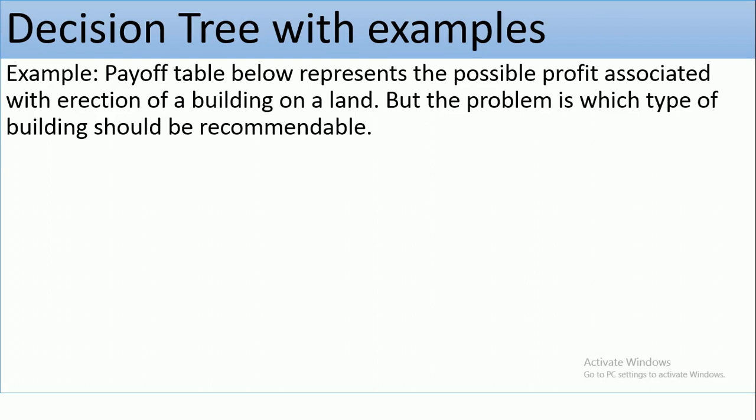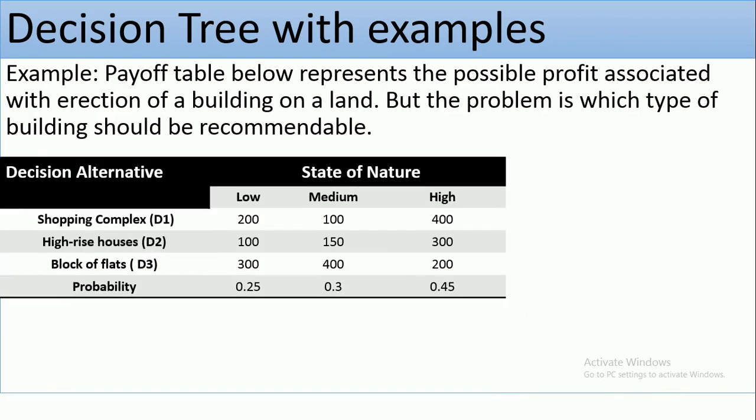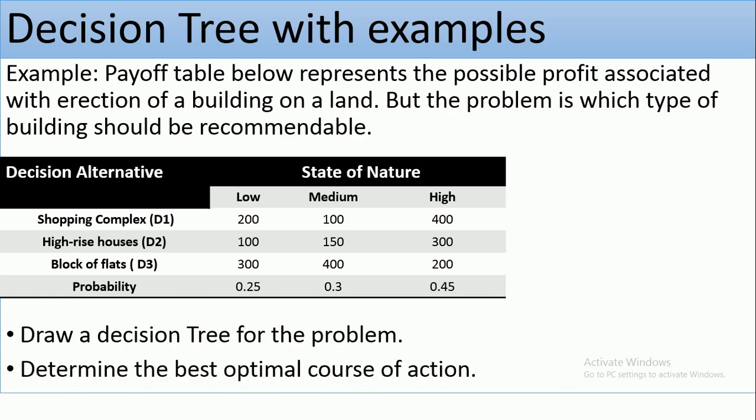Now, let's move into a typical example of how to solve problems, how to analyze decision situations using decision tree. So we have this payoff table which represents the possible profit associated with erection of a building on the land. I want to draw a decision tree for the problem and also determine the best optimal course of action. So this is very simple compared to the analytical approach. Here we go.